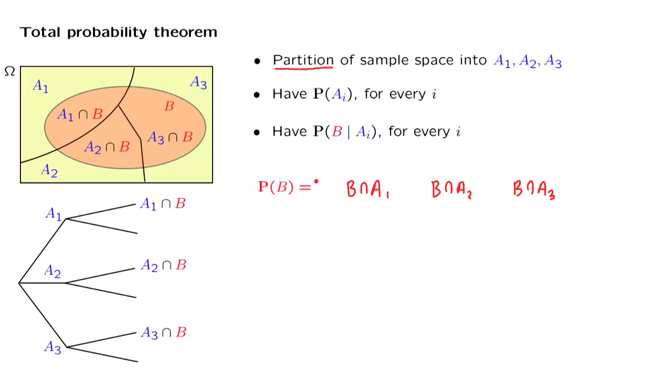Therefore, the probability of B is going to be, by the additivity axiom of probabilities, equal to the sum of the probabilities of these sub-events.